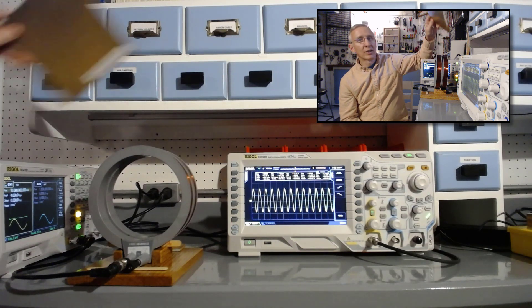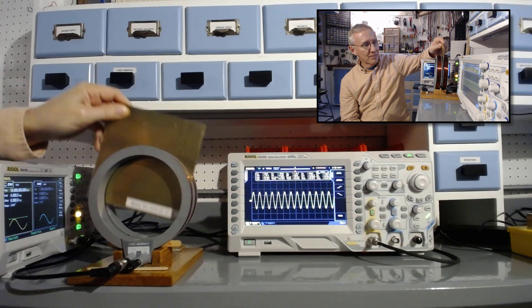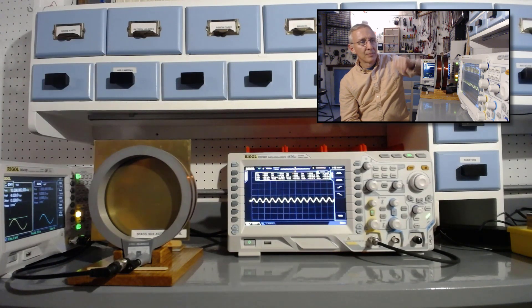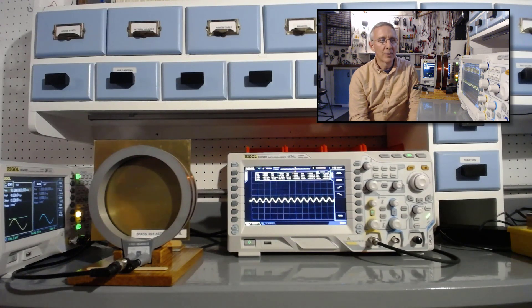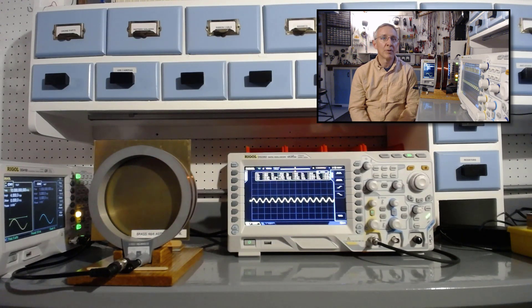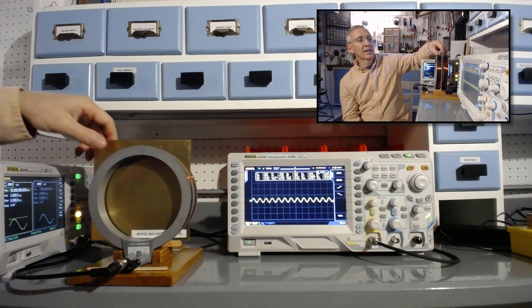If we look at brass, this is some 50 mil thick brass. Brass is not quite as good of a conductor, but this is a thicker piece. We can see that we're down to about 380 millivolts, so it's comparable to the performance of the copper. We've got a little bit less conductivity, but it's thicker.